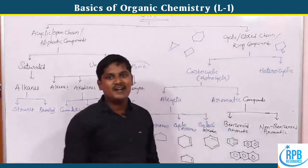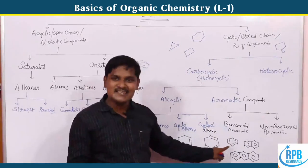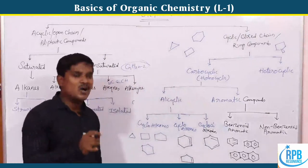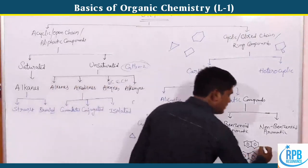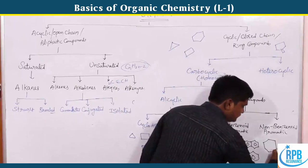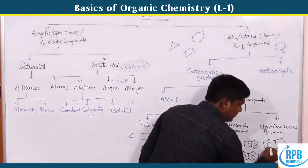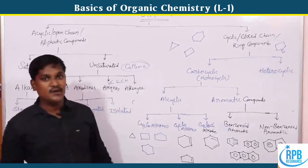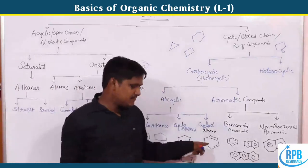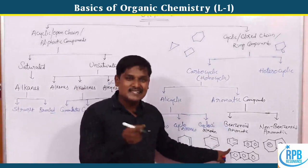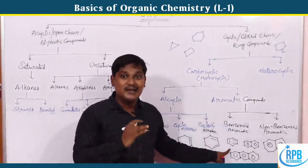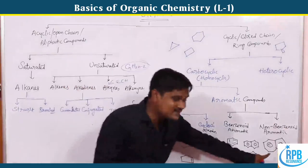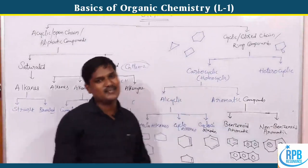Non-benzenoid aromatic compounds are those with aromaticity but without a six-membered benzene-type ring structure. A best example is azulene — a 7-membered ring fused with a 5-membered ring, with a positive charge on one and negative charge on the other. Such compounds with aromaticity but no benzene-type structure are called non-benzenoid aromatic compounds.